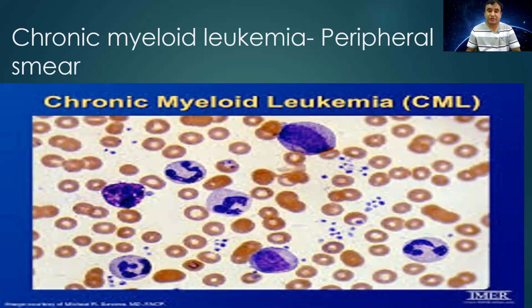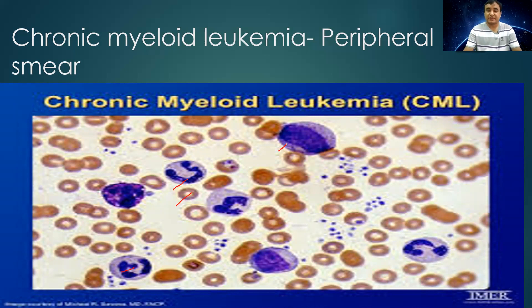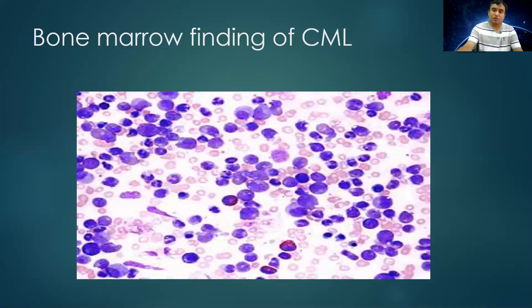Most of the time we diagnose CML by examining peripheral smears. The red cells are RBCs and the purple cells are myeloid series cells in relatively mature stages. If you see myeloid series cells at different stages of development — promyelocytes, metamyelocytes, and mature hypersegmented neutrophils — then we can say the patient has CML. On bone marrow examination, there is an excessive amount of myeloid series cells, especially neutrophils, and the myeloid-to-erythroid ratio is very high in CML.